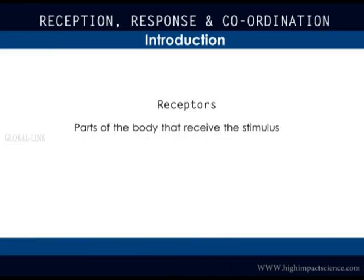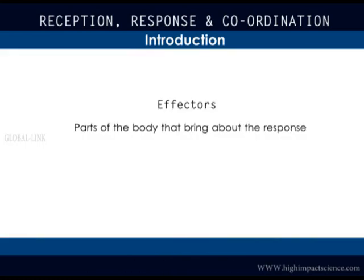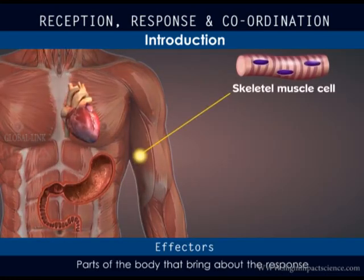The parts of the body that receive the stimulus are called receptors. In our case, pain receptors on the skin are the receptors. The parts of the body that bring about the response are called effectors. In this case, the skeletal muscles of the arm are the effectors.